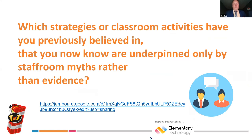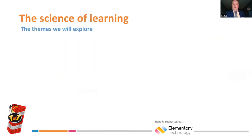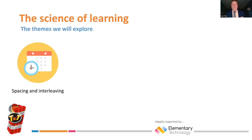That got us warmed up and thinking about the things we used to believe in rather than what we know now. So we're going to look at the science of learning and there are three themes to explore. First, spacing and interleaving — I think lots of people get this wrong and talk about them as one thing, almost as if it's one word. We're going to look at the differences tonight.